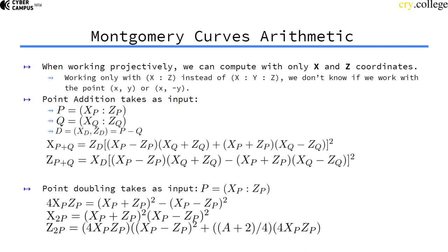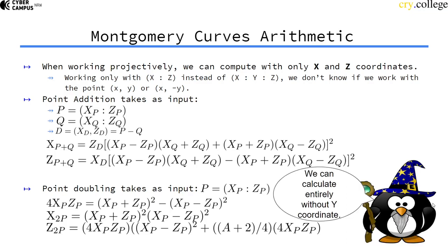For doubling we need another formula. If we want to double a point P, we calculate these formulas here that you can read up on later. So we can actually calculate completely without the Y coordinate and we have much nicer addition formulas than with the Weierstrass curves.